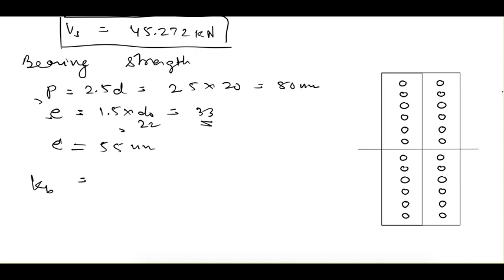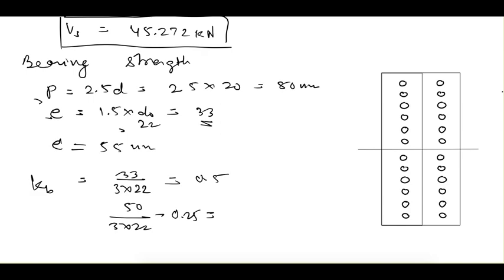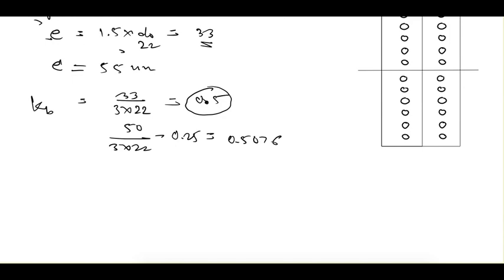Now we find k_b for bearing strength. k_b is the minimum of: e/(3·d_not) = 33/(3×22) = 0.5, and p/(3·d_not) − 0.25 = 50/(3×22) − 0.25 = 0.5076. So k_b = 0.5, since the other two values (f_ub/f_u and 1) are obviously greater.